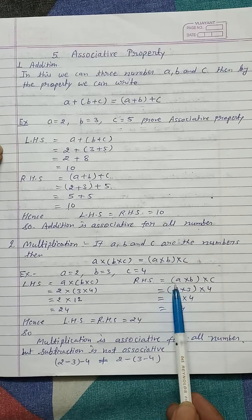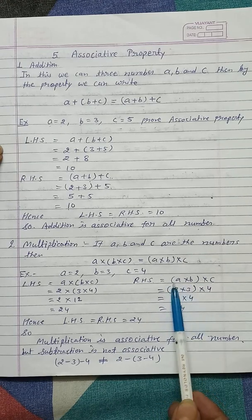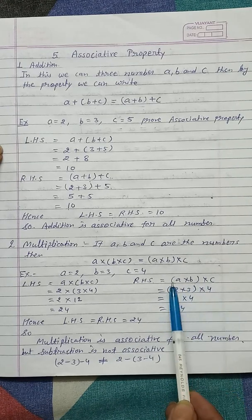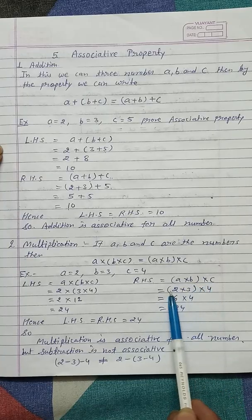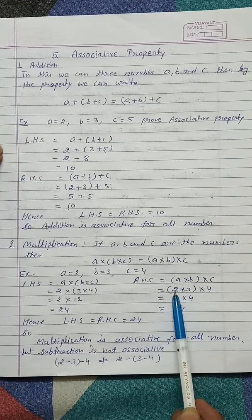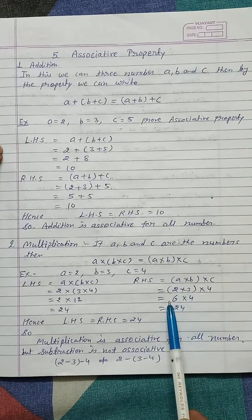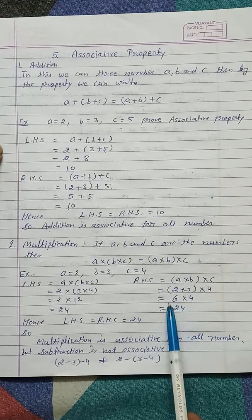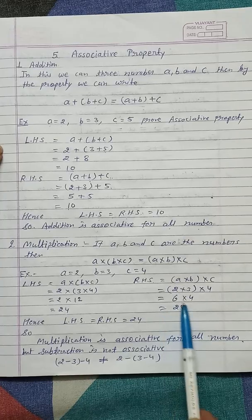Now again take the RHS: (A into B) into C. Put the value of A, B, C and first find the value of these expressions. 2 into 3 equals 6 and it is multiplied by 4. Finally we get 24.